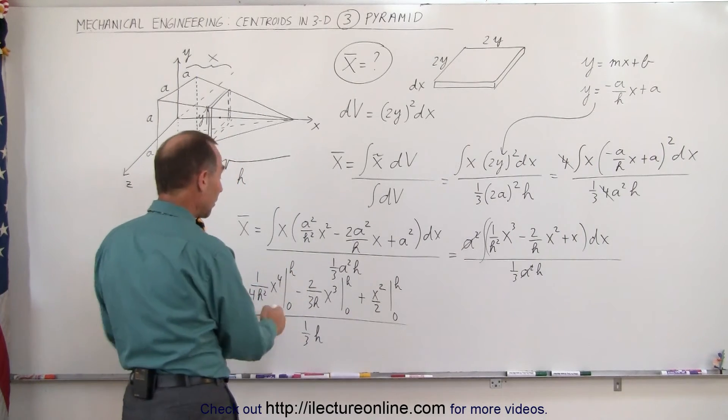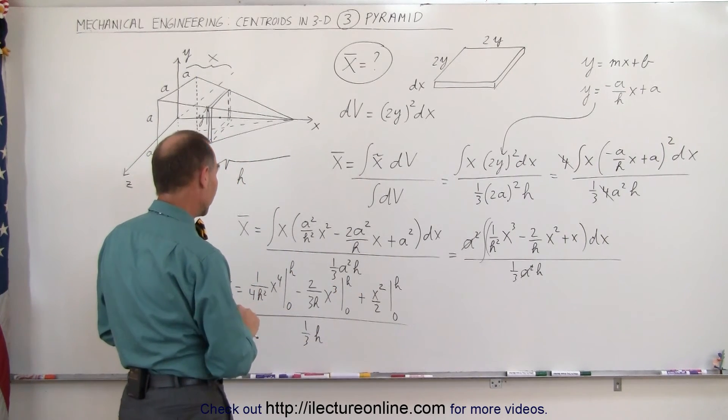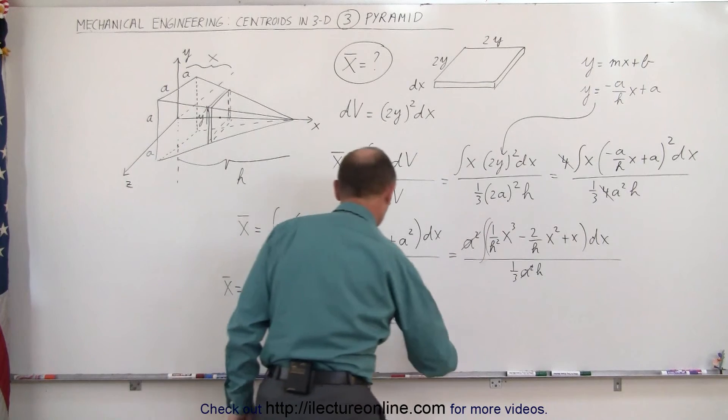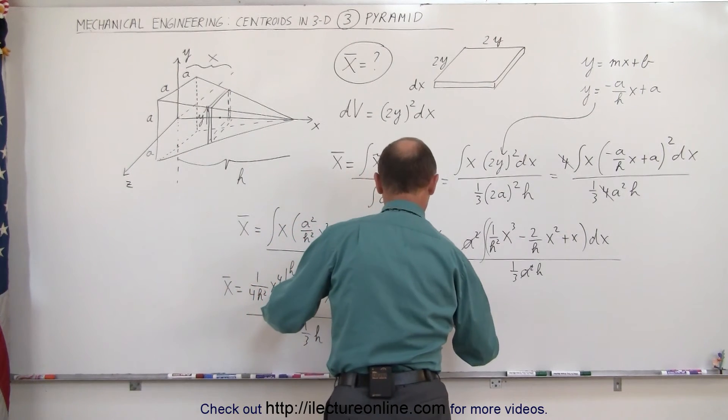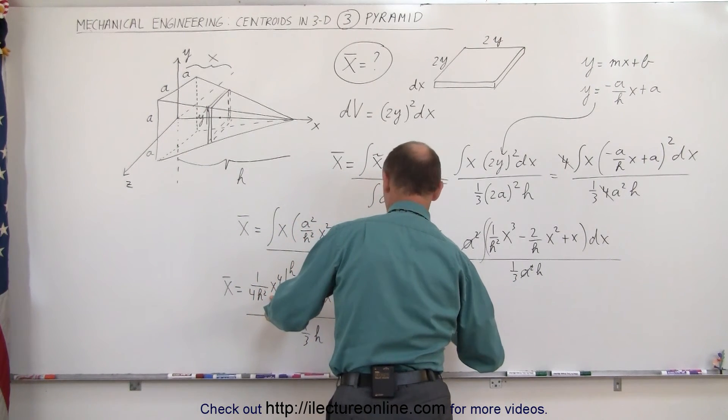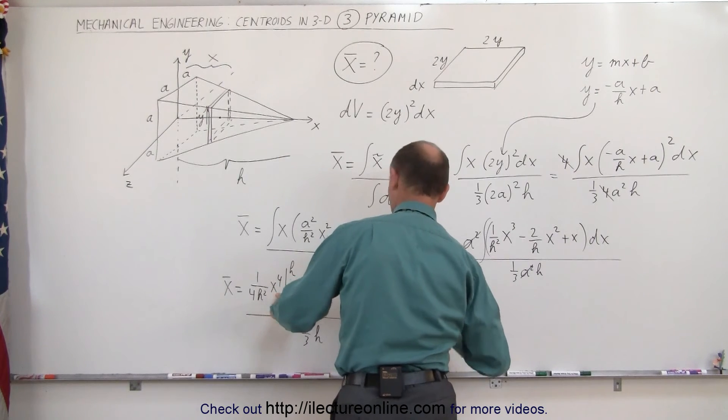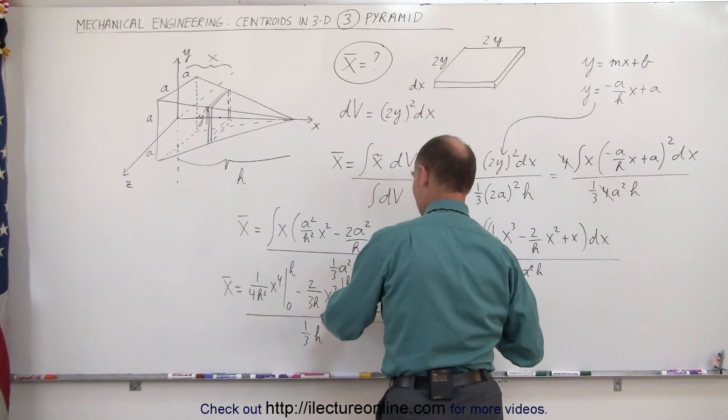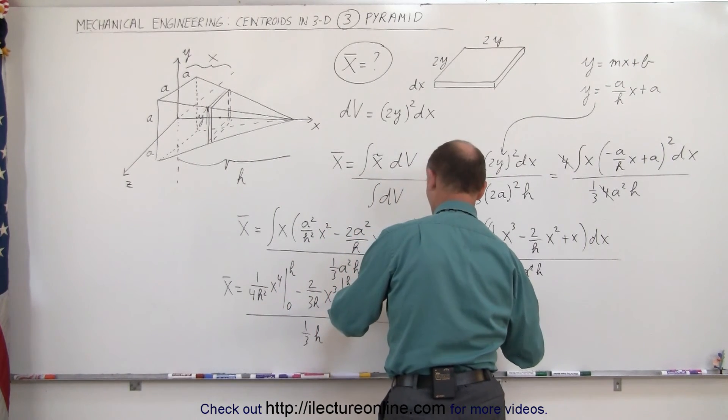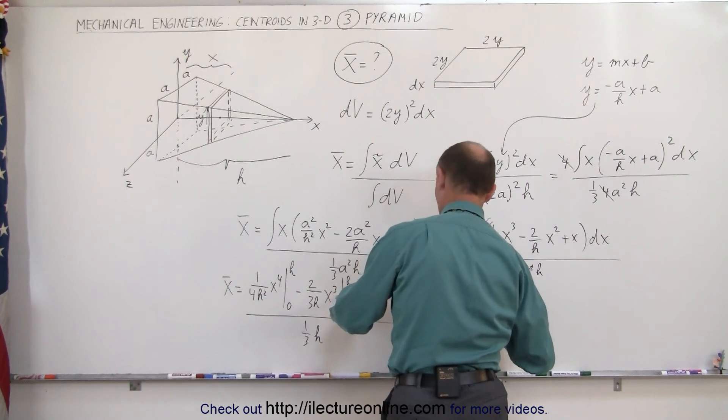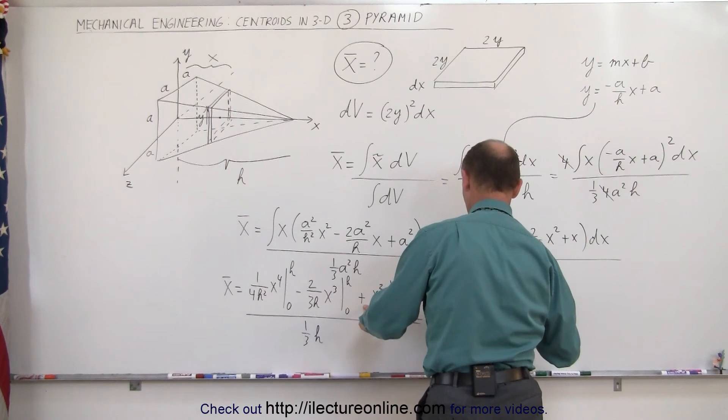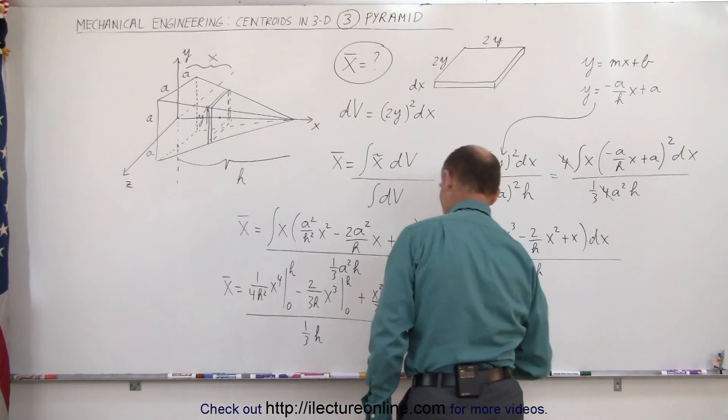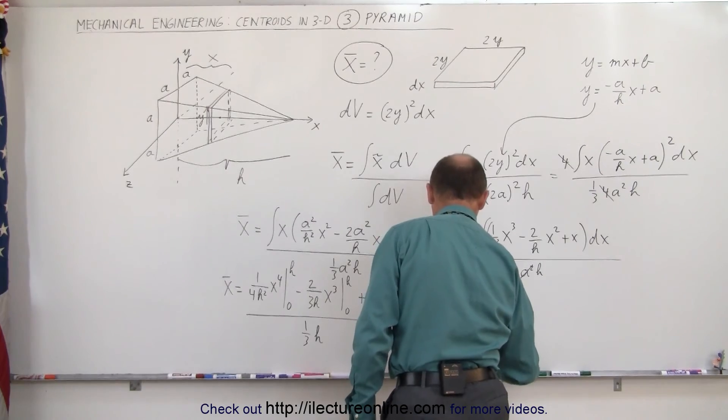Let's now plug in the upper limit. When we plug in the lower limit, we get 0, so we only need to plug in the upper limit. This is equal to h to the fourth divided by 4 h squared, minus 2 h to the third divided by 3 h, plus h squared divided by 2, the whole thing divided by one-third h.